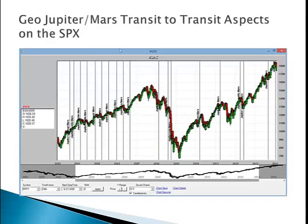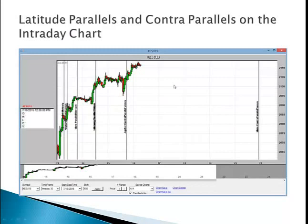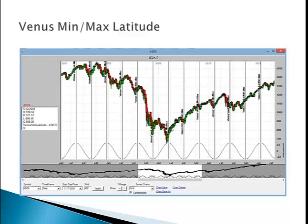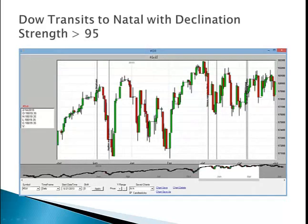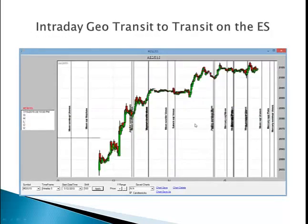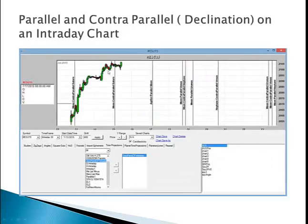Here's an example of geo Jupiter-Mars transit-to-transit aspects on the SPX. Here's latitude parallel and contraparallels on an intraday chart. Here the Venus min and max latitude is shown. This is an example of declination strength greater than 95 on a max of 100. This is the Dow transits to natal.